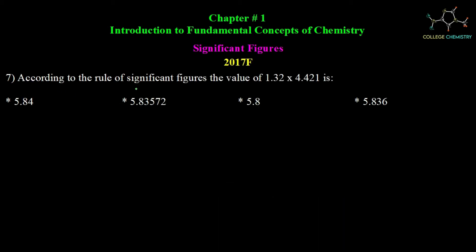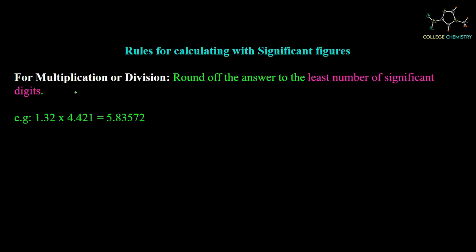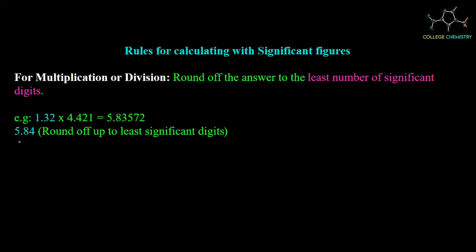Question number 7: according to the rule of significant figures, what is the value of 1.32 × 4.421? For multiplication or division, we round off the answer to the least number of significant digits. Here, 1.32 has 3 significant figures and 4.421 has 4 significant figures. We round to 3 significant digits. The final answer is 5.84.